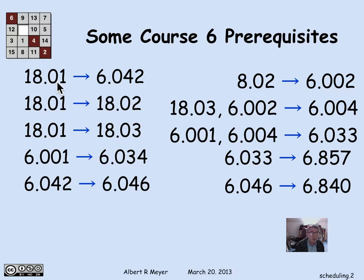So what this tells me is that 18.01 is listed as an immediate prerequisite in the catalog for 6.042. 18.01 is also an immediate prerequisite of 18.02. 6.001 and 6.004 are both prerequisites of 6.033,